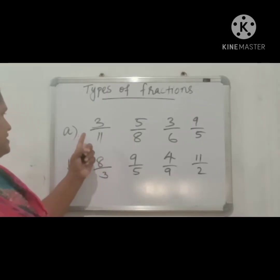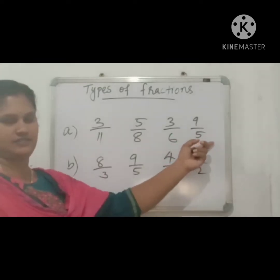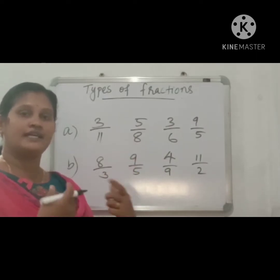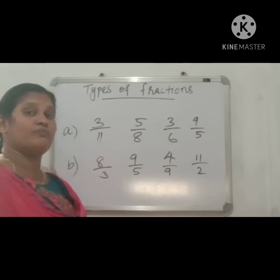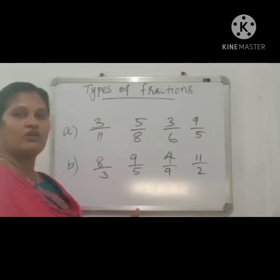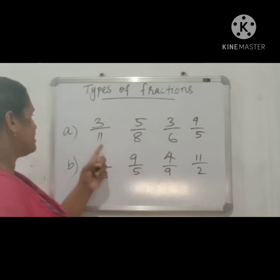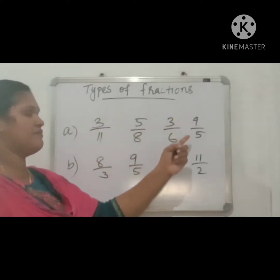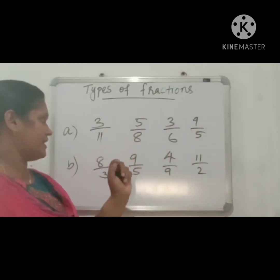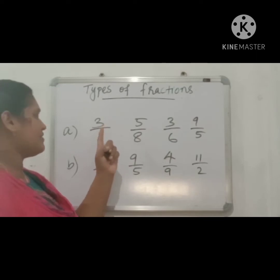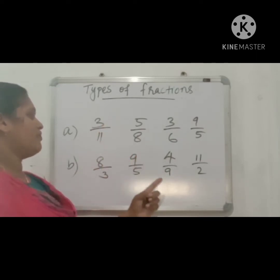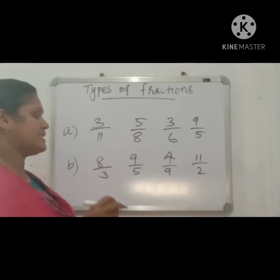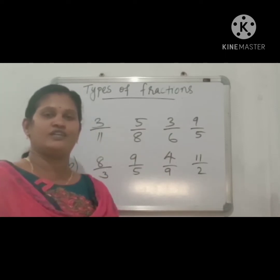A set of fractions with different denominators are called unlike fractions. For example, 3 by 11, 5 by 8, 3 by 6, 9 by 5 — all denominators are different, so they are called unlike fractions. Similarly, 8 by 3, 9 by 5, 4 by 9 and 11 by 2 also have different denominators, so they are unlike fractions.